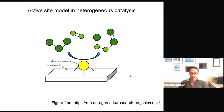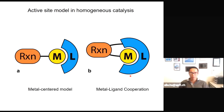The nature of these active sites as well as how reactions take place at these sites is a central topic of research in catalysis. Until now in heterogeneous catalysis, including electrocatalysis, the details of active sites are still difficult to understand. We can compare this to a similar field: homogeneous catalysis.